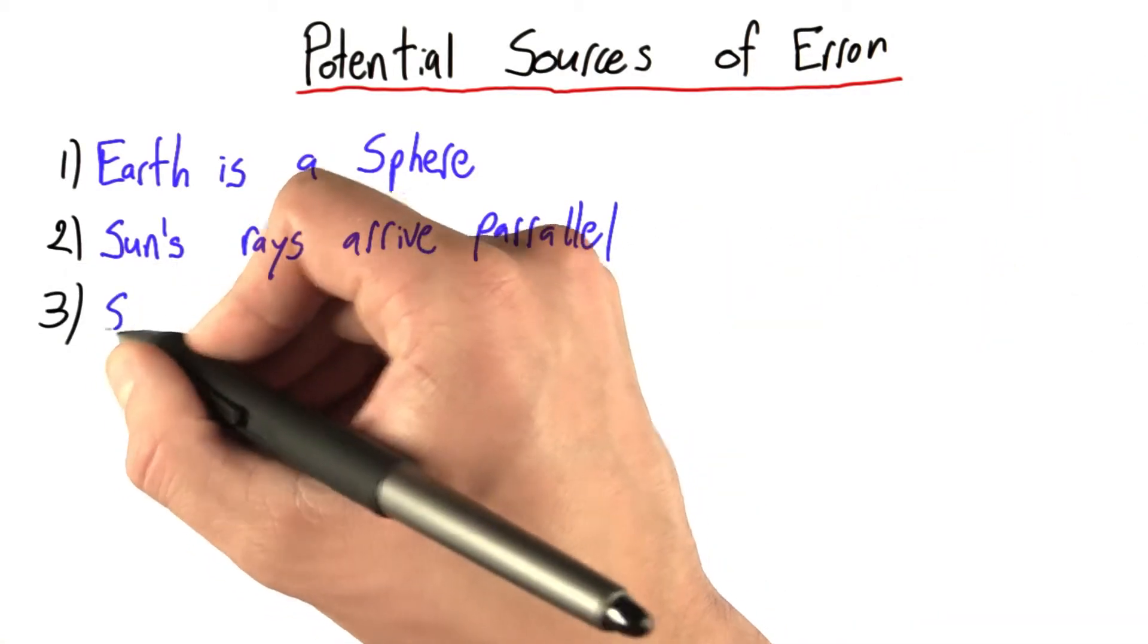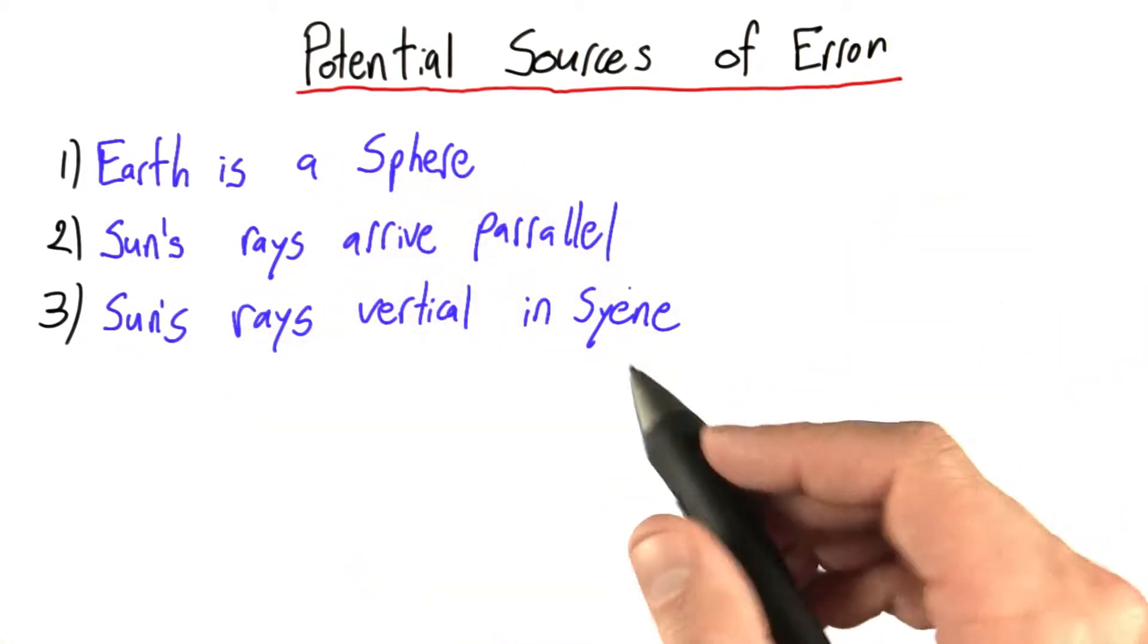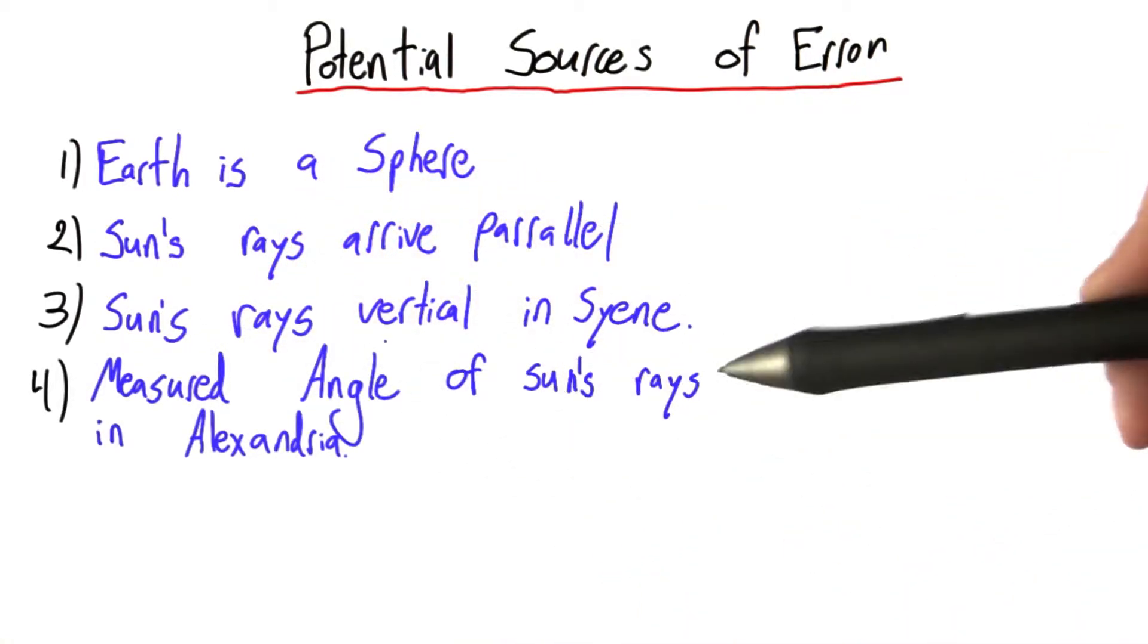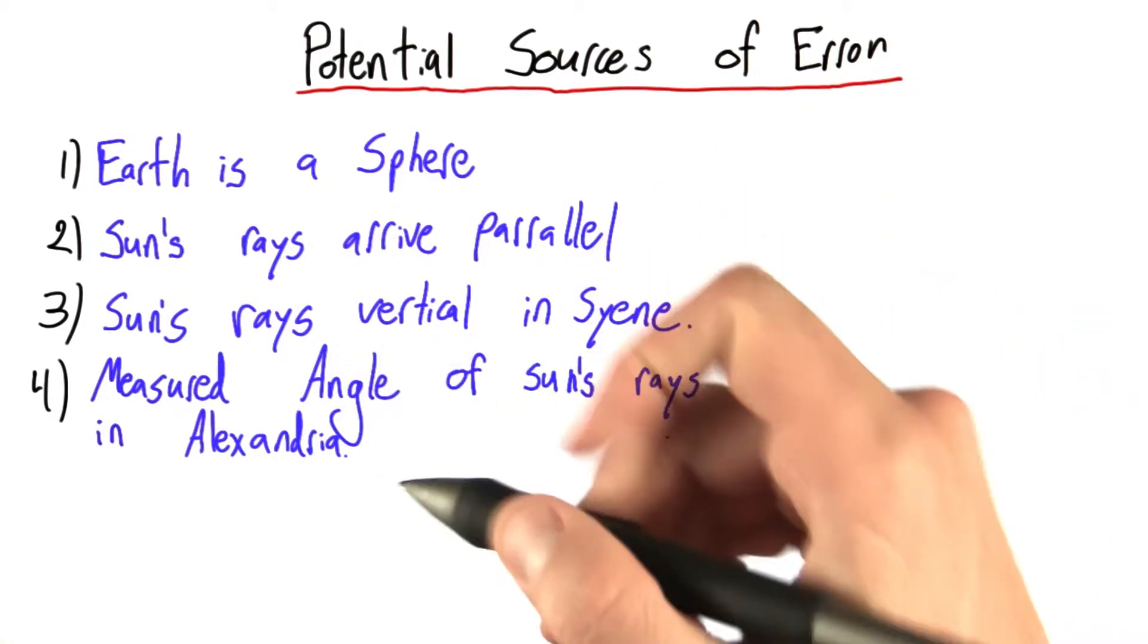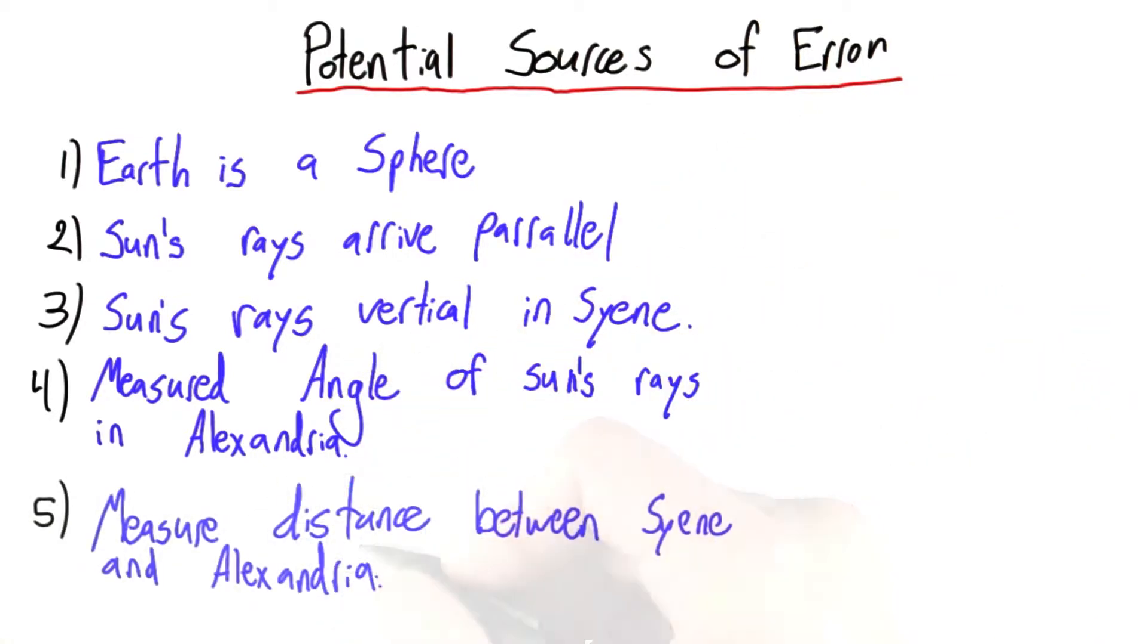Next we had the fact that the sun's rays were vertical in Syene. We also had to measure the angle of the sun's rays in Alexandria. This is that angle that we called alpha. And finally, we had to measure the distance between Syene and Alexandria.